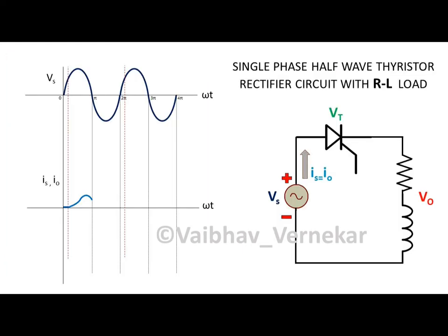The circuit current follows the input voltage Vs till the end of the positive half cycle. In the negative half cycle, as anode voltage is negative, one of the two conditions is not satisfied. So, even if the gate signal is applied, it will not trigger the thyristor. Hence, there is no red dotted line in the negative cycle.